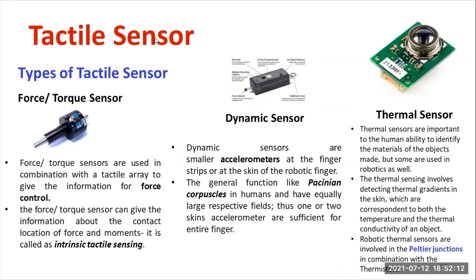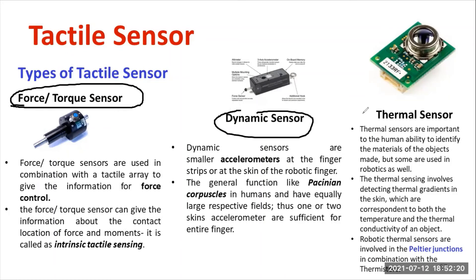There are different varieties of tactile sensors available in the market. For example, force torque sensors, dynamic sensors, and thermal sensors. The thermal sensor operates based on the Peltier effect — you can measure the temperature of a human body more accurately than a thermometer. The dynamic sensor is mainly used in automobile applications, especially to measure acceleration. In an accelerometer, you can use this kind of dynamic sensor.